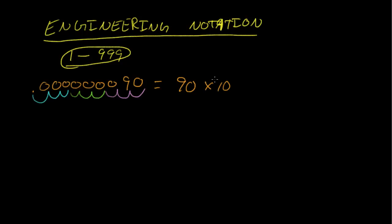So what does that equal? It's going to equal 90 times 10 to the negative 9. So basically what we end up doing is we're moving in groups of 3. So 1, 2, 3, 1, 2, 3, 1, 2, 3.